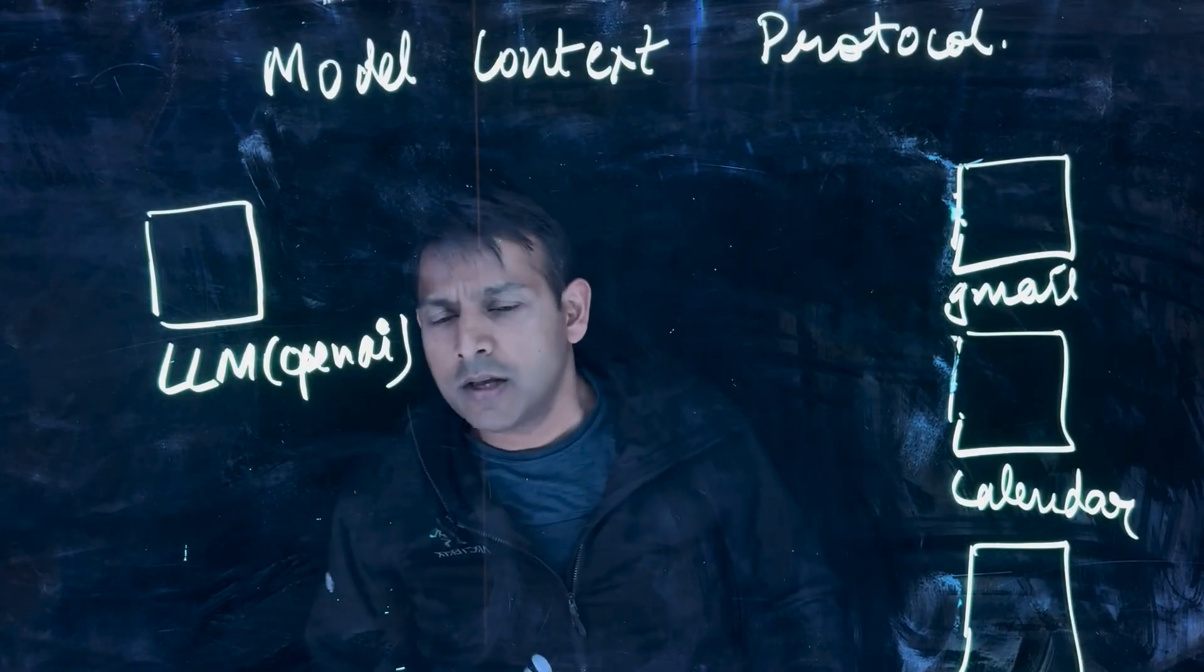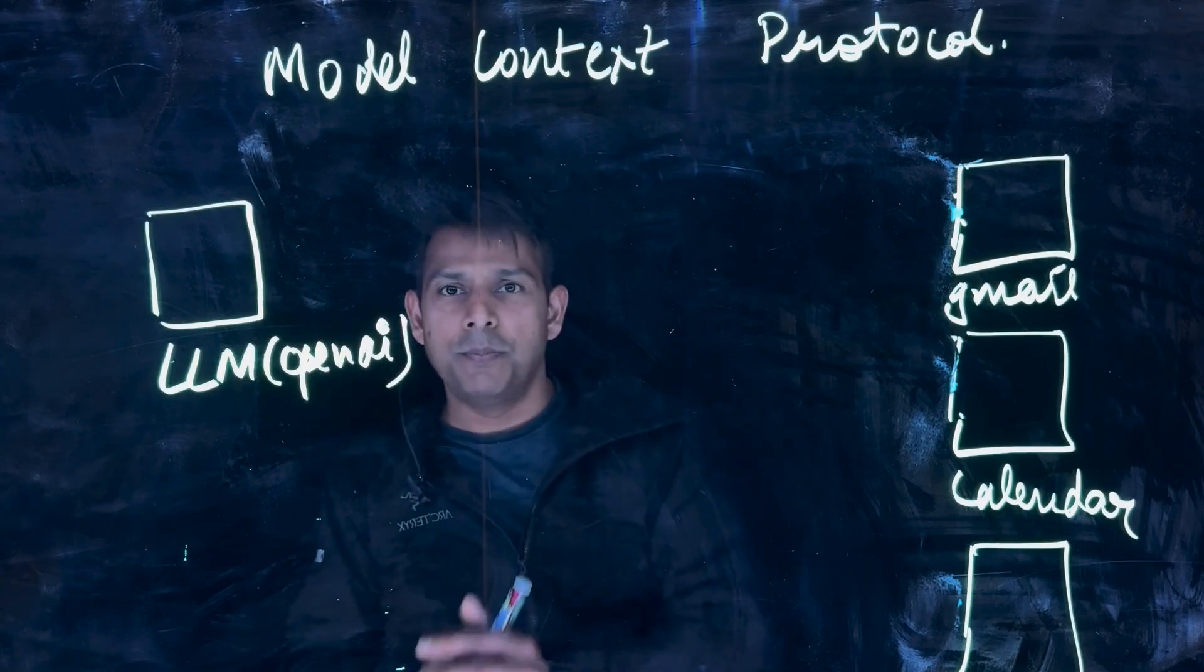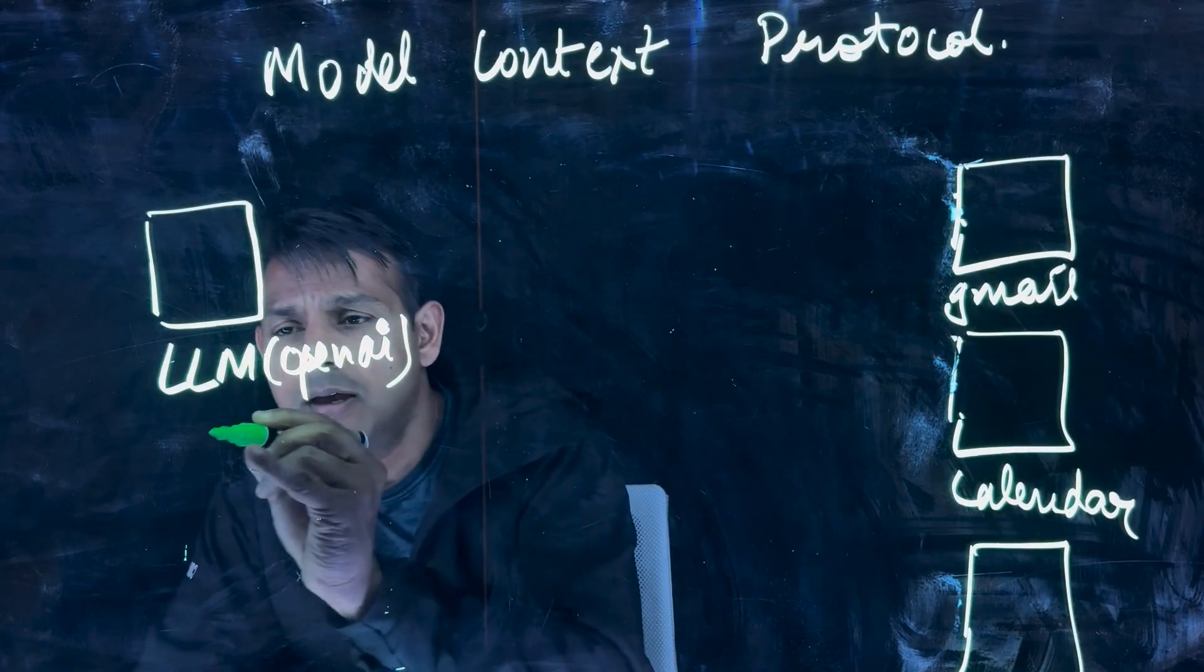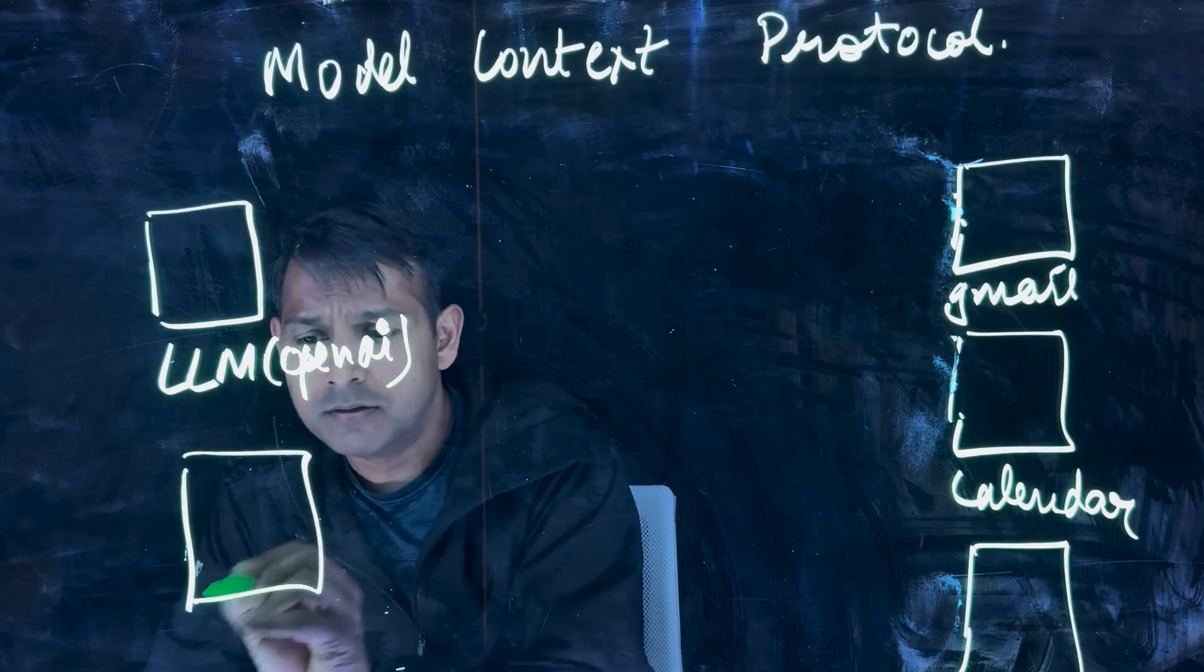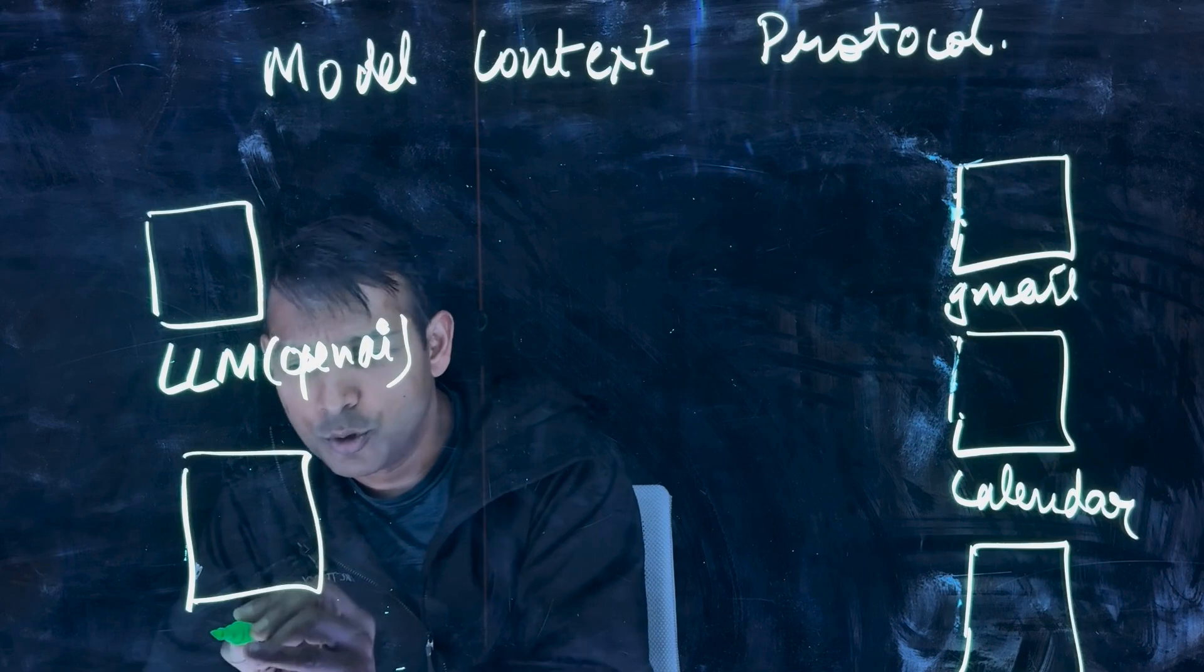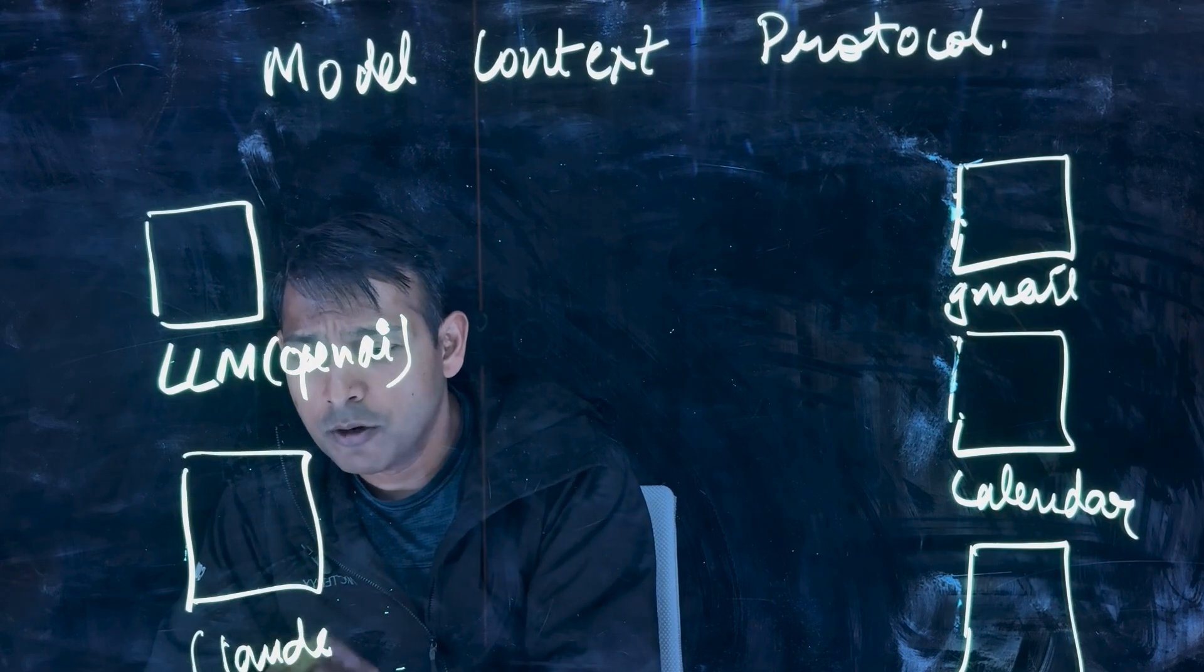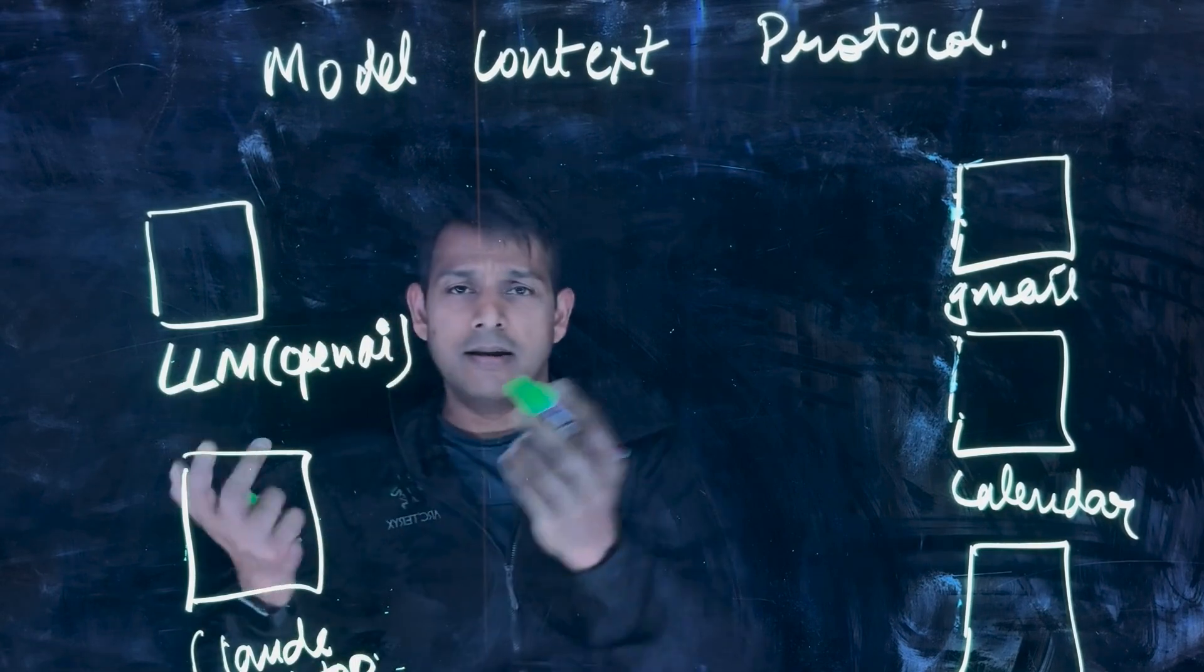So there are a few different components when I look at the MCP end to end. One is called a host application. And I think the host application could be an LLM, could be something like a Claude desktop, an AI agent. All of those could be called a host application. So for our example, let's consider a Claude desktop and an LLM.